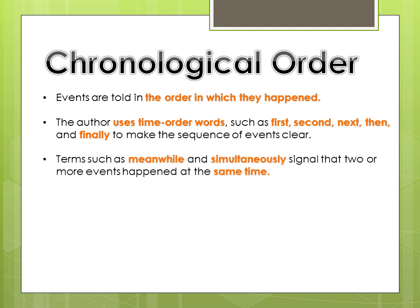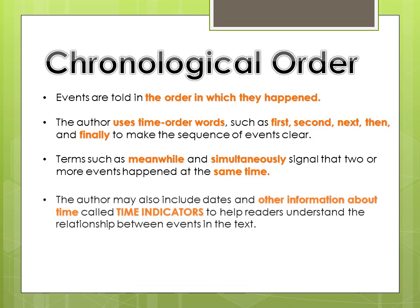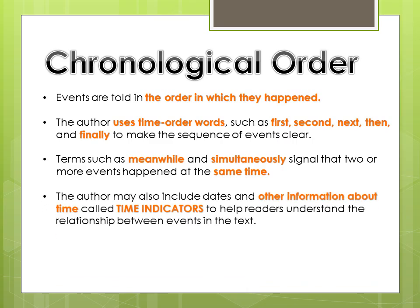Terms such as 'meanwhile' and 'simultaneously' signal that two or more events happened at the same time. And finally, an author may also include dates and other information about time called time indicators to help readers understand the relationship between events in the text.